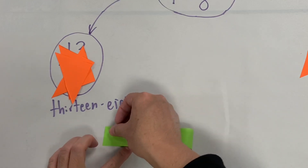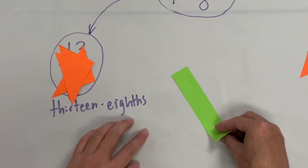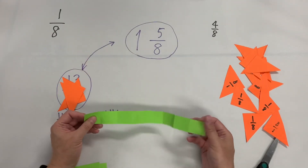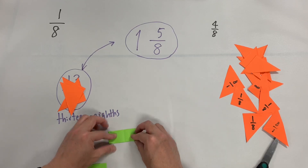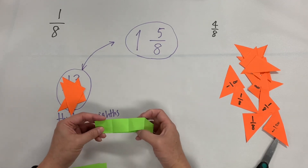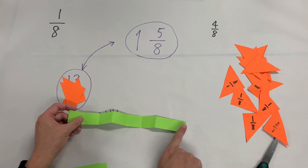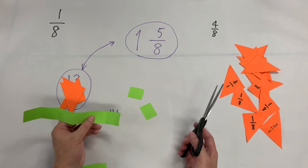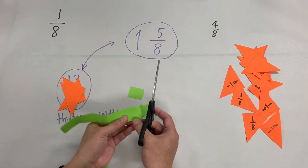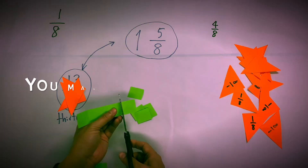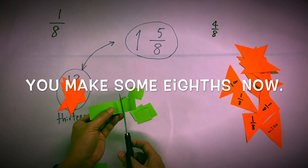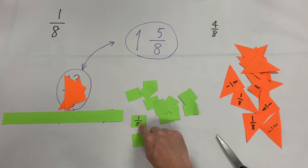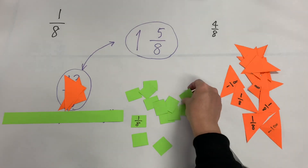Now it's your turn — you're going to make lots and lots of eighths. Fold the paper in half, then fold it again, and fold that again to make one eighth, two eighths, three eighths, four eighths. Let's see if you can make eight one-eighth pieces. I'm going to cut this into two eighths — it's your turn, so let's make these eighth pieces.